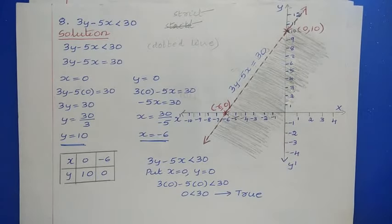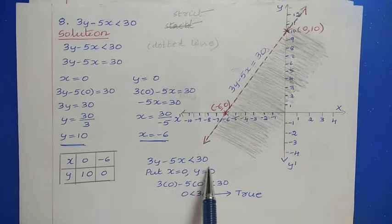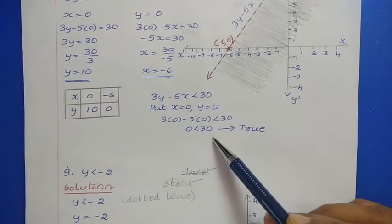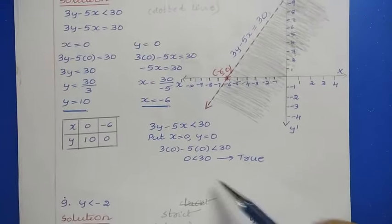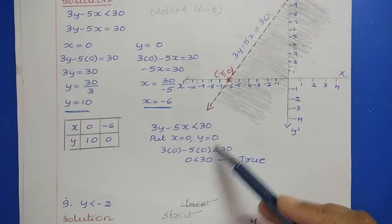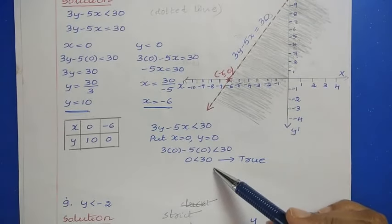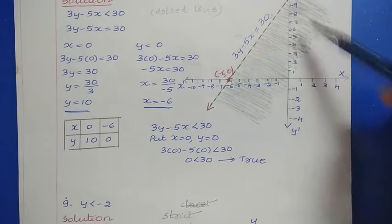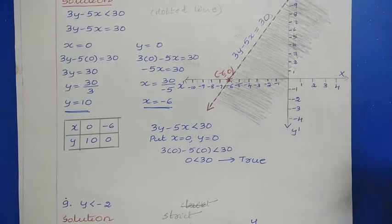To find the shaded area, substitute x = 0 and y = 0 into 3y - 5x < 30. We get 0 < 30, which is true. Since we used the origin and got a true result, we shade the area towards the origin. That is the shaded region for 3y - 5x < 30.